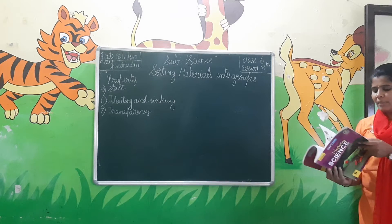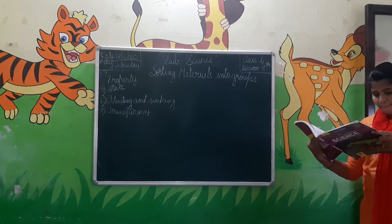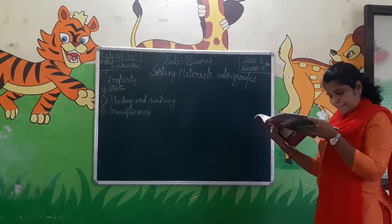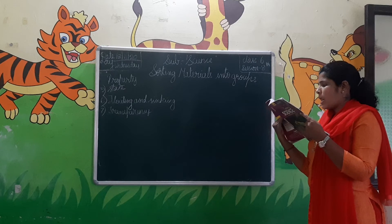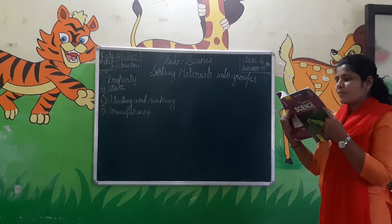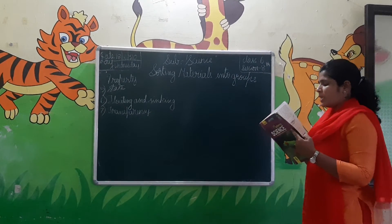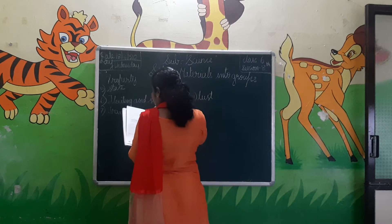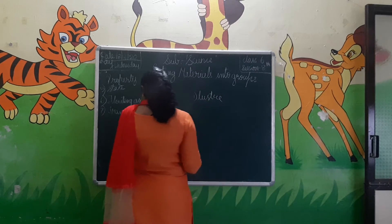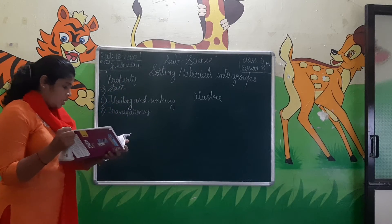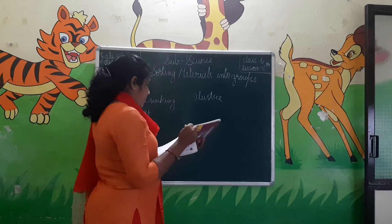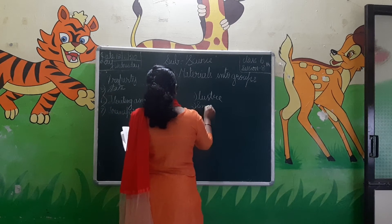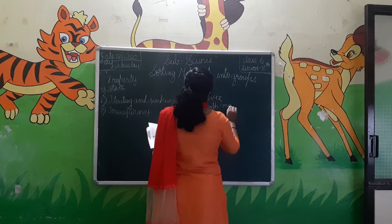Now fill in the blanks. The special kind of shine present on a material is called luster. Materials that have no bumps or notches and have a plain surface are called smooth materials.